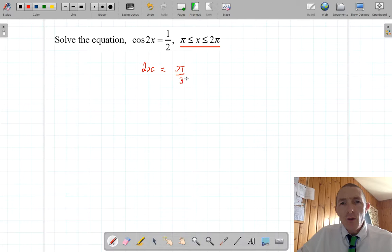By the way, if you don't know where I got that from, you might want to look at the exact trig ratios that we need for IB. But there's another answer for that. This is in the first quadrant. The next answer comes in the fourth quadrant.